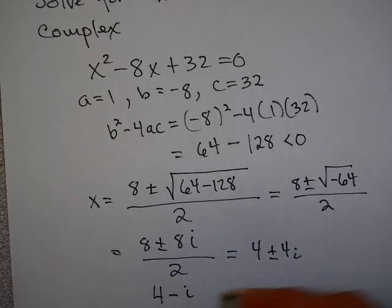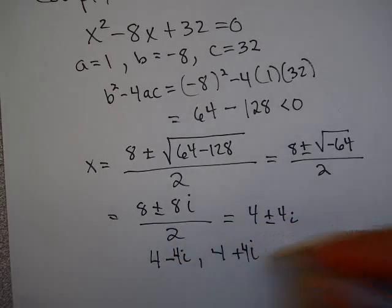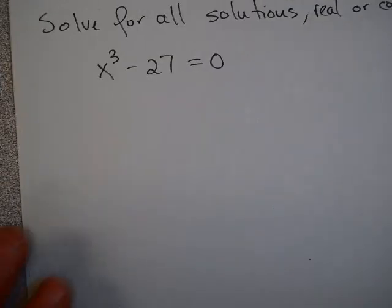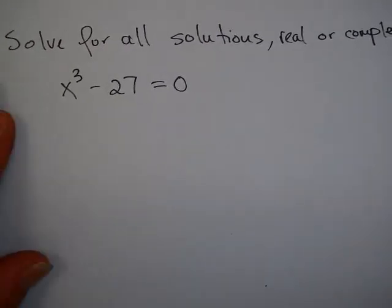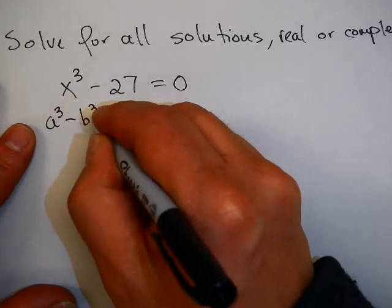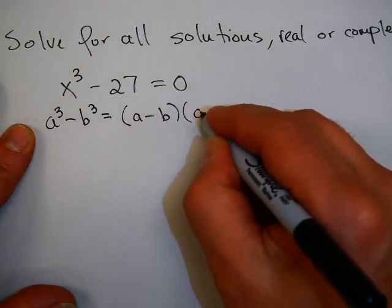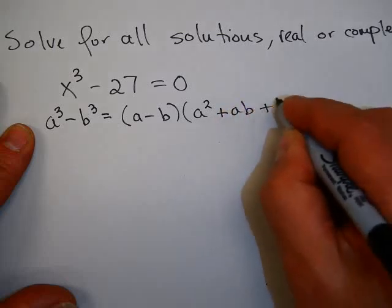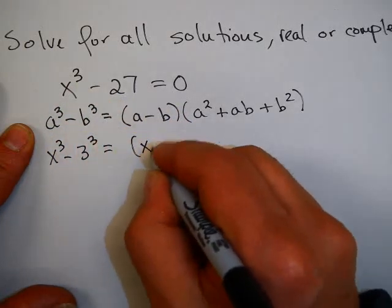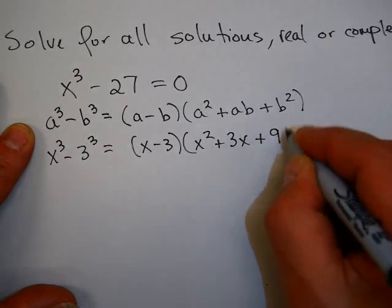In WebAssign you may be asked to list the solutions separately, so make sure you understand that 4 ± 4i means x = 4 + 4i and x = 4 − 4i. Now, let's find all solutions — real or complex — for x³ − 27 = 0. This is not a quadratic, so we use the difference of cubes formula: a³ − b³ = (a − b)(a² + ab + b²).